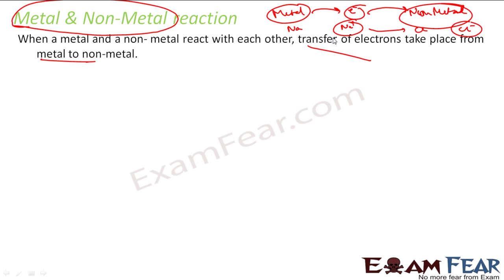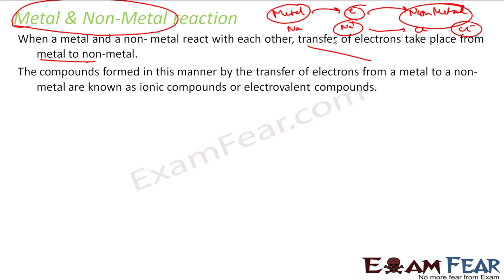Why do they do this? We will explain in the next two chapters where we cover atomic structure and valence electrons — why metals have a tendency to lose electrons and non-metals have a tendency to gain electrons. The compound formed by the transfer of electrons — and there is no sharing — are called ionic compounds or electrovalent compounds.